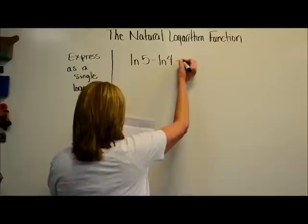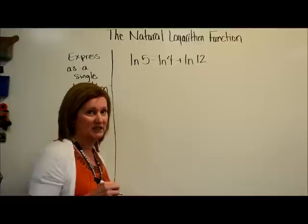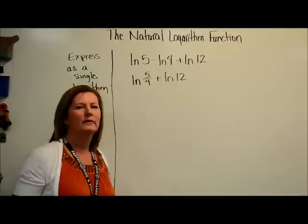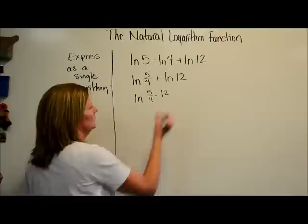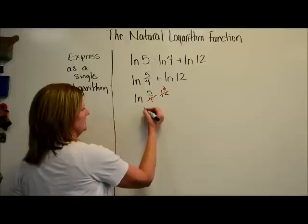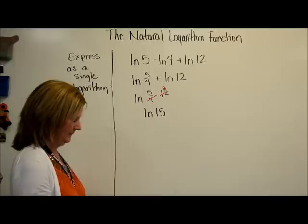Express as a single log: natural log of 5 minus natural log of 4 plus natural log of 12. Same rules, same laws. Subtraction in the log world means division, so ln of 5/4 plus ln of 12. Addition means multiplication: ln of (5/4 times 12). Reducing — 4 goes into 12 three times — and we get ln of 15 as a single logarithm.